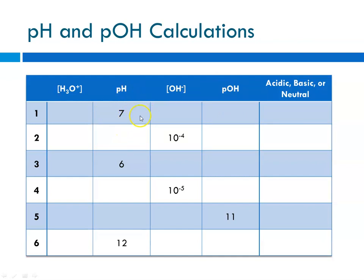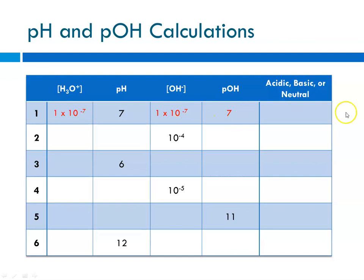Given a pH of 7, the hydronium ion concentration is 1 times 10 to the minus pH, so 1 times 10 to the minus 7. Since we know the pH, the pOH is 14 minus 7, which is 7. The hydroxide ion concentration is 10 to the minus pOH — in this case, 10 to the minus 7. Since the pH is 7, this is neutral.